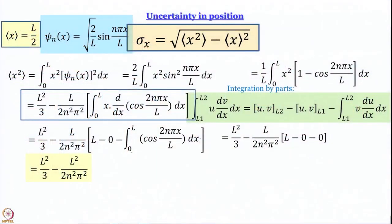This is where we stopped in the last module. We have worked out an expression for uncertainty in position, and that turns out to be L² / 3 minus L² / (2N²π²). To be precise, what we worked out is the average value of x², which is the first term under the square root sign in the expression for uncertainty in position. The saving grace is that we already know the average value of x from a previous module — that is L/2.